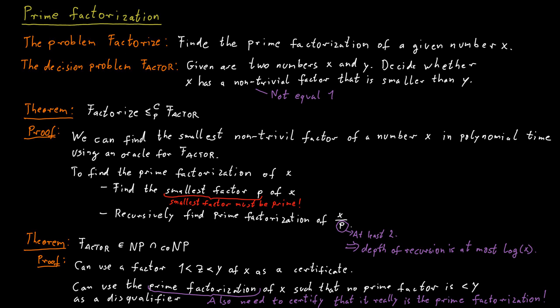So overall, we have succinct certificates for factor and we have succinct disqualifiers for factor, and therefore factor is in the intersection of NP and co-NP.